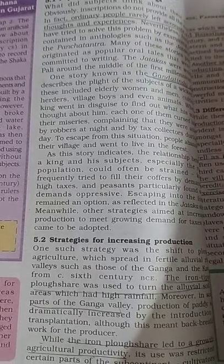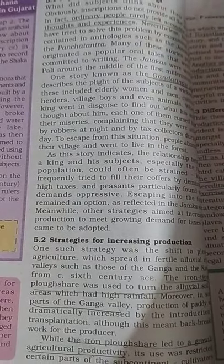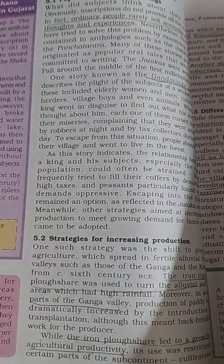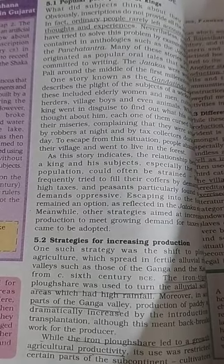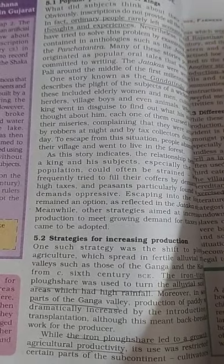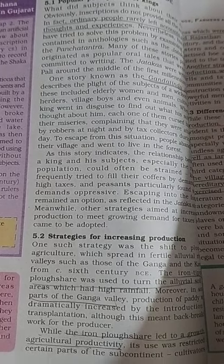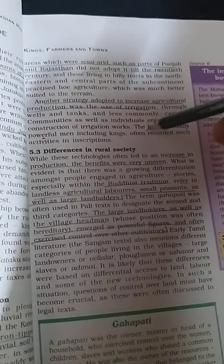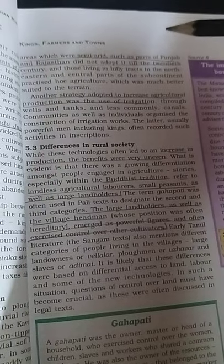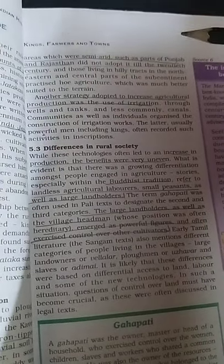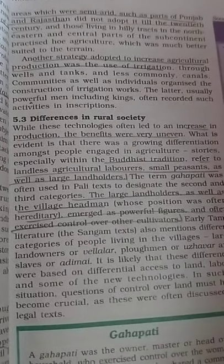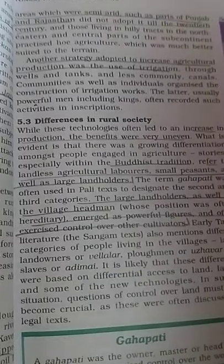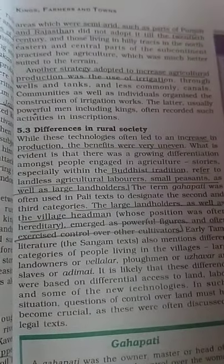The spread into fertile alluvial river plains and the use of iron-tipped ploughs were key strategies. Transplantation was used for paddy cultivation — transplanting saplings in waterlogged fields rather than broadcasting seeds. Use of co-agriculture in semi-arid regions, irrigation through wells, tanks, and canals, and land grants were strategies adopted by ruling elites to extend agriculture into new areas. Students, you have to elaborate these points within the word limit.